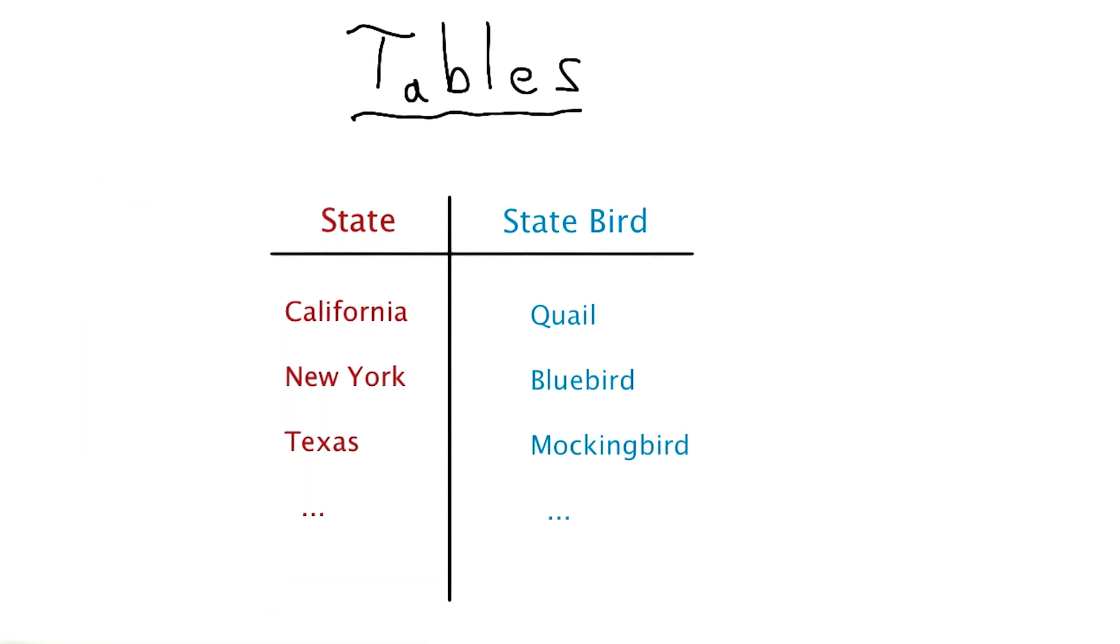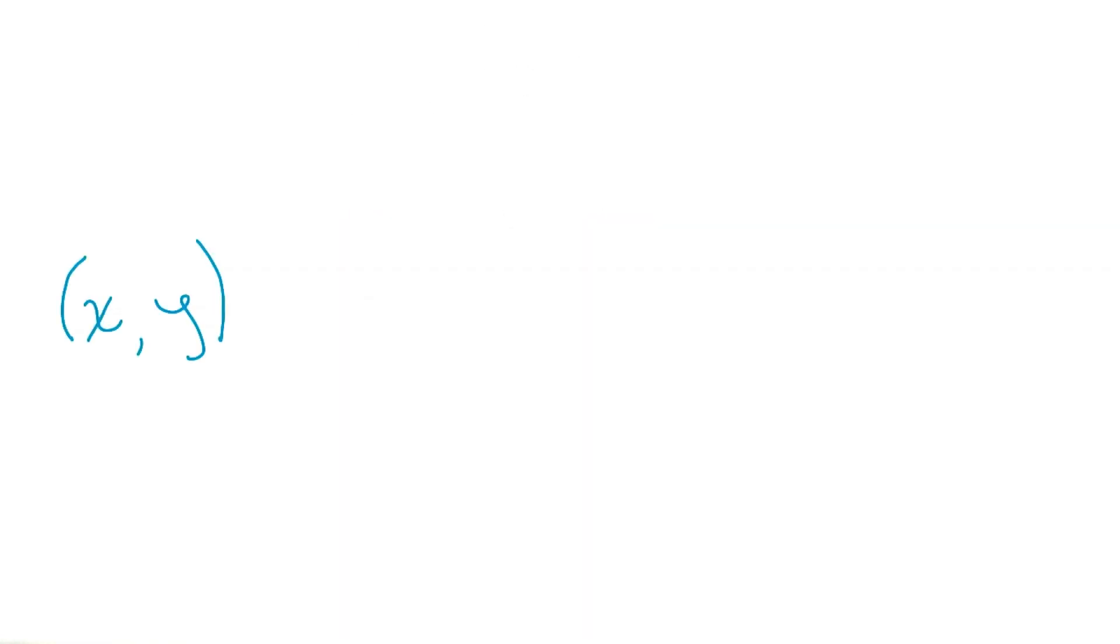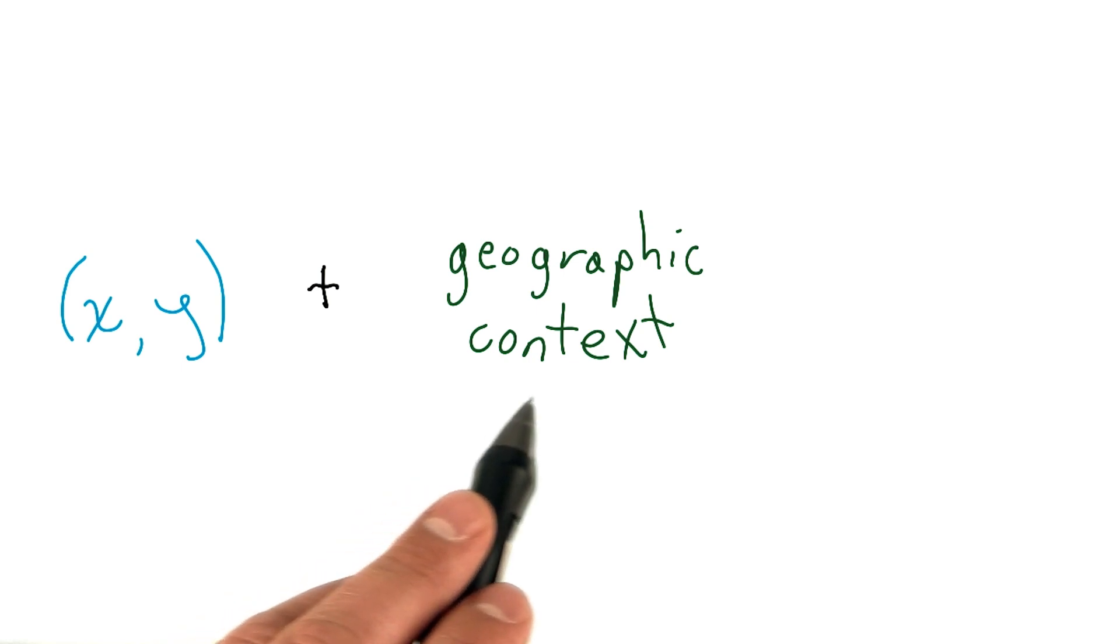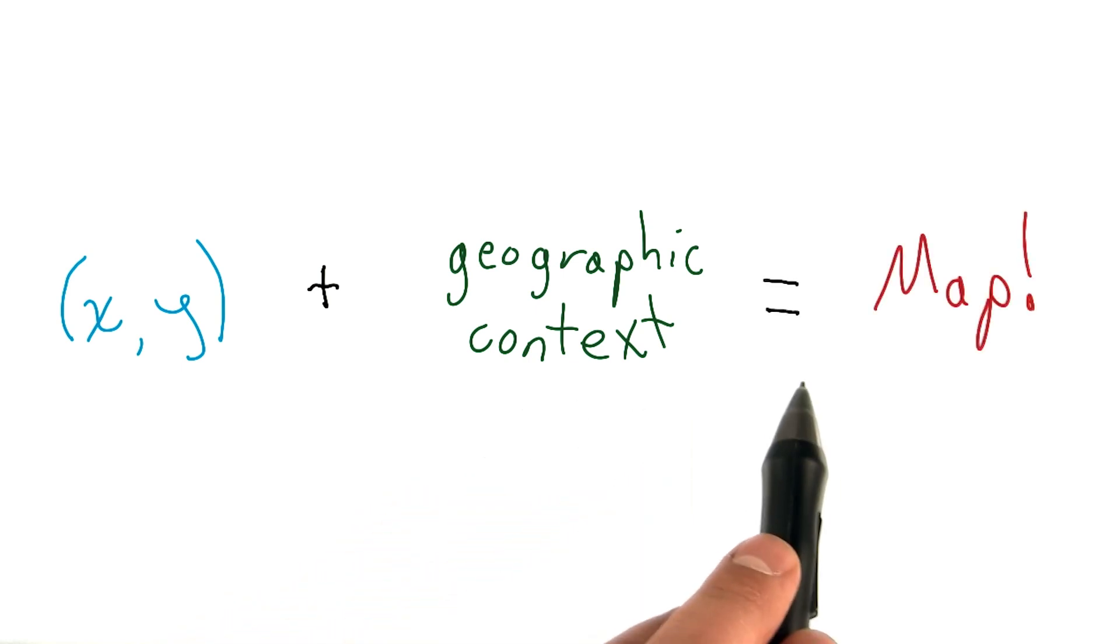Maps are interesting because they are something of a compound visual encoding. A map is simply an x and a y coordinate combined with some geographic context, often in the case of latitude and longitude. And when combined, we get a mapping of an x and y pixel coordinate to some latitude and longitude, which equals a map.